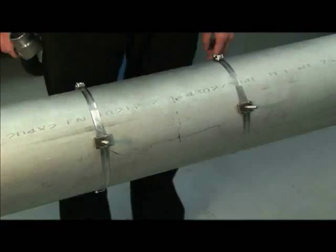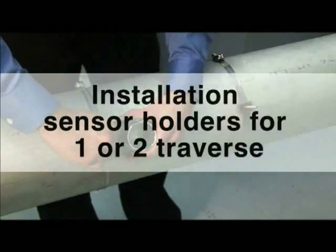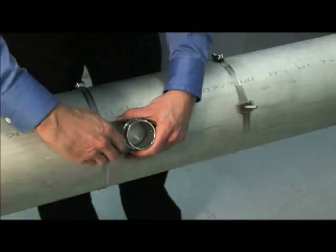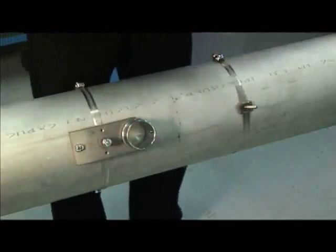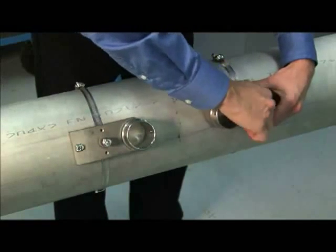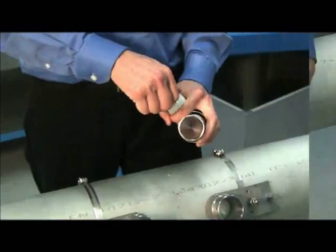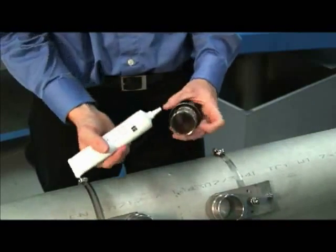The next steps are identical for both one and two traverse installation. Secure the sensor holders to the mounting post. Make sure they are facing in the correct direction as shown. After the sensor holders are fastened to the pipe, apply coupling gel to the face of the sensor. Approximately 1 mm thickness is required for the surface area which will be in contact with the pipe.